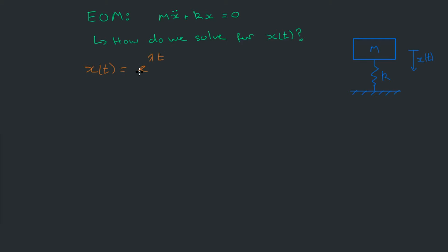We assume x(t) = e^(λt) so that when we differentiate it we're not changing our function greatly — it's more or less staying the same. The λ values that come out are just constants; they're unknown and could be real or complex — we'll find out later. When we differentiate, we get x-dot(t) = λe^(λt), because λ is just some unknown constant. Then x-double-dot(t) gives us λ²e^(λt).